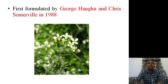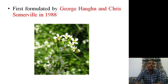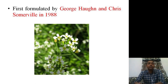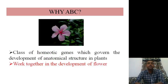The ABC model was first formulated by George and Chris in 1988. In the picture here you can see Arabidopsis thaliana, which was the experimental plant used by George and Chris to determine the ABC model of floral development. Before you understand why it is called ABC, you need to know that a flower is nothing but a modified shoot.